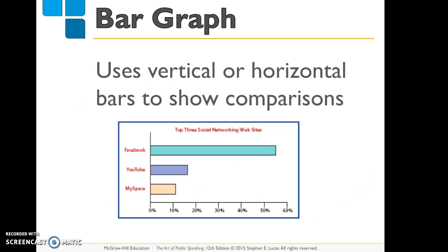Bar graphs are also effective for showing comparisons between two or more items. A bar graph shows bars of varying lengths to compare quantities or magnitudes, and bars may be arranged either vertically or horizontally. When creating line and bar graphs, make sure you label both axes, start the numerical axis at zero, compare only like variables, and put no more than two lines on a line graph. This example, though dated, illustrates how a bar graph shows that Facebook was far more popular than both YouTube and MySpace at that time.